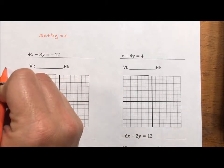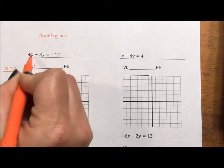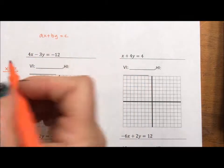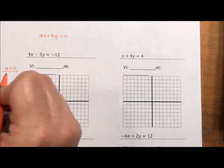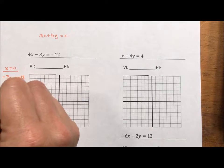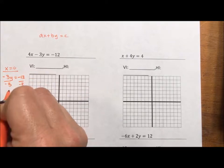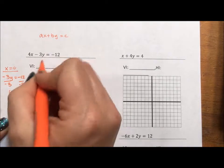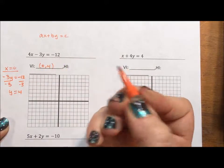If x is 0, I don't worry about that first term because 4 times 0 is 0, then negative 3y is negative 12. And if I divide by negative 3, y is 4. So my vertical intercept is 0, 4.